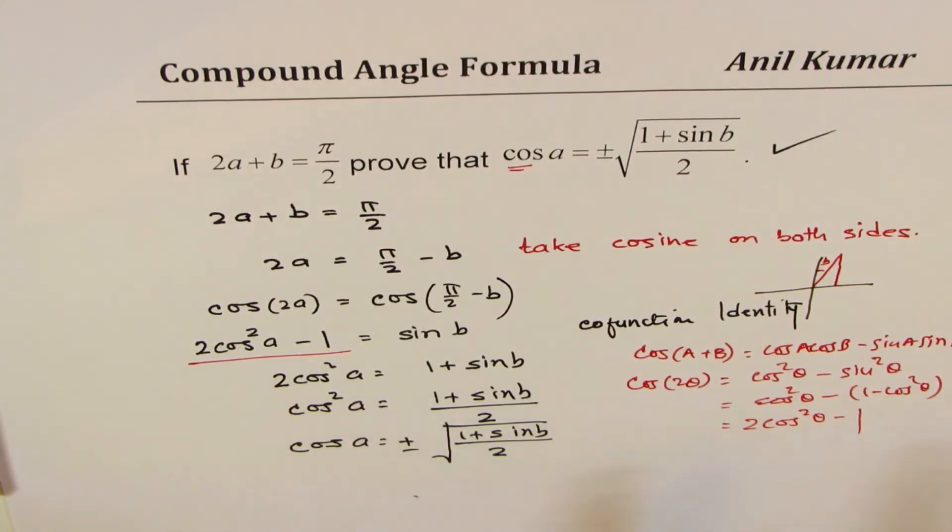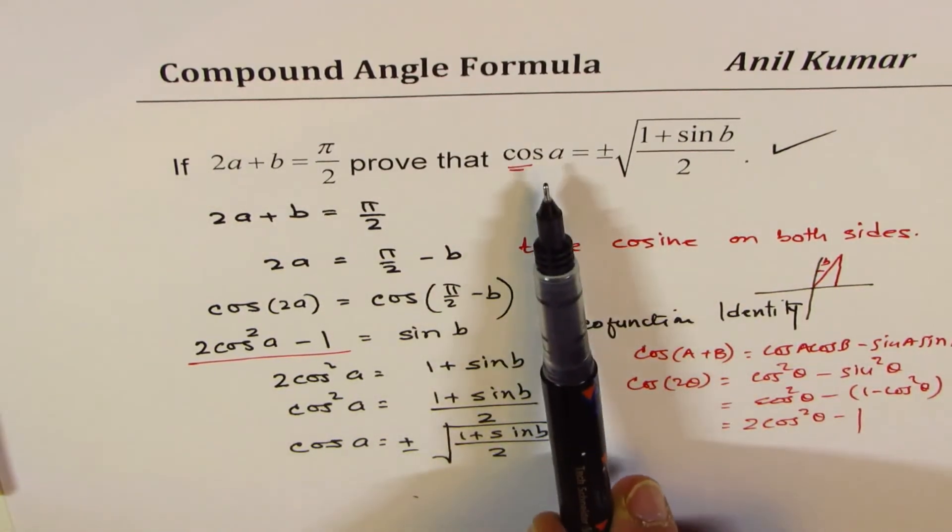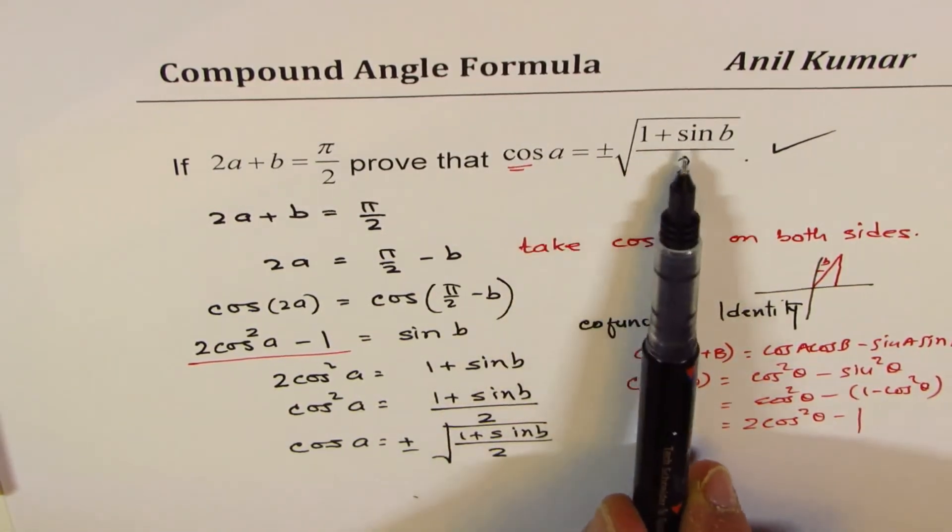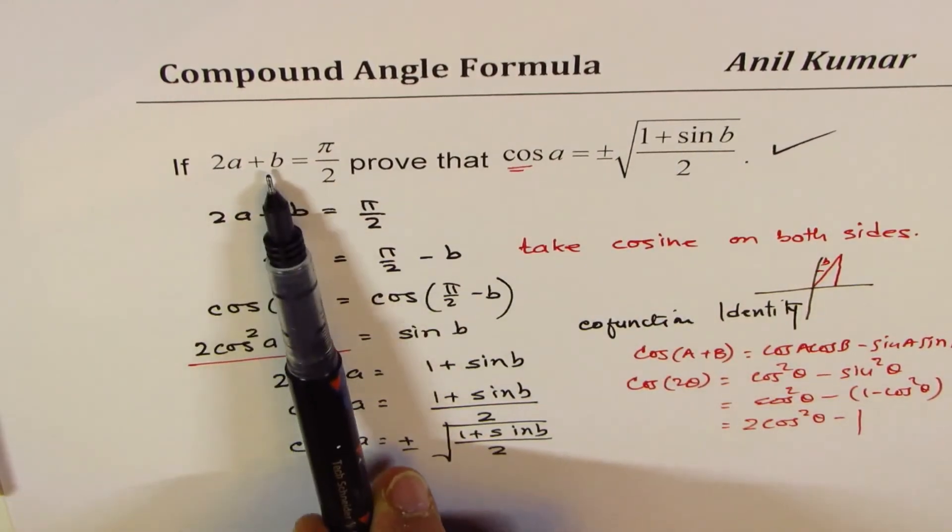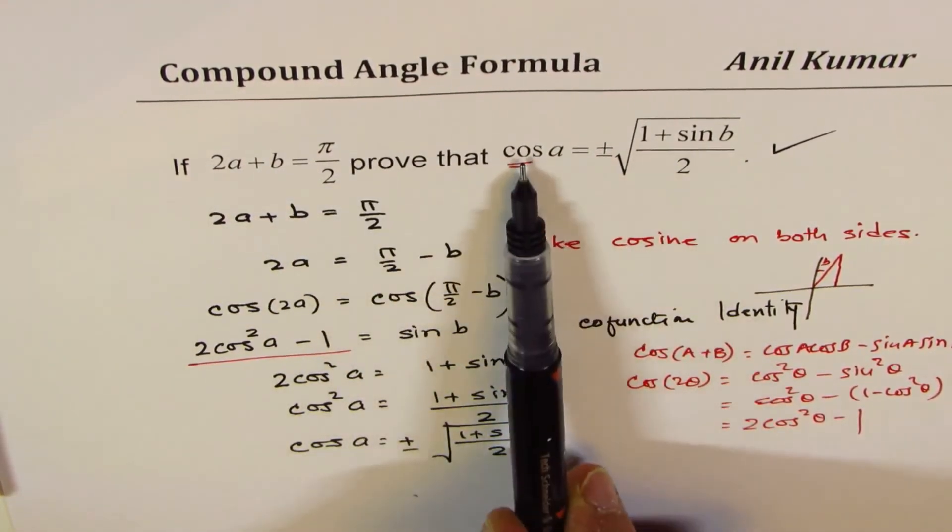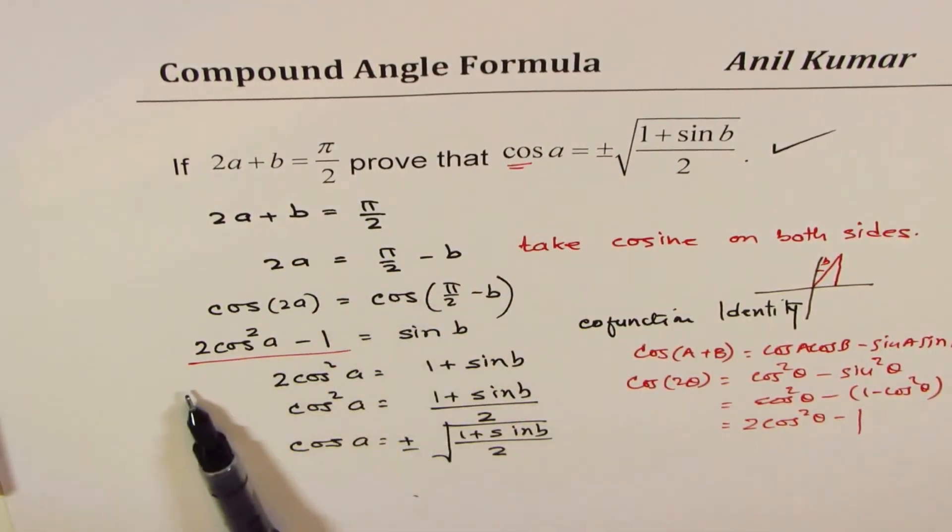I hope the rest is all clear. The idea is, since we want to prove cos a equals something with sin b, we took b to the right side and then took cosine on both sides. And cos 2a double angle formula is applied here.